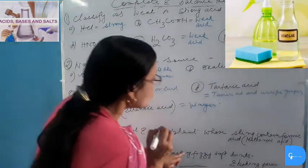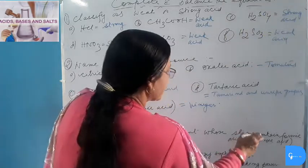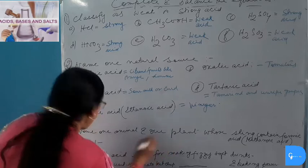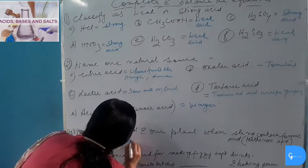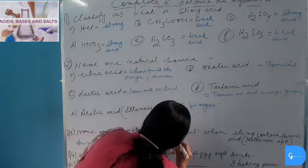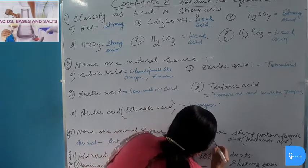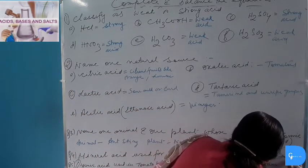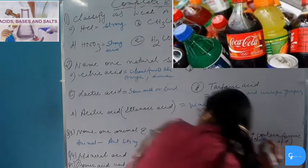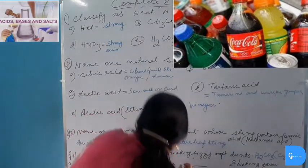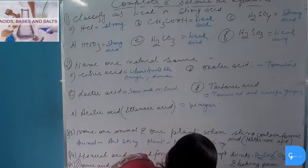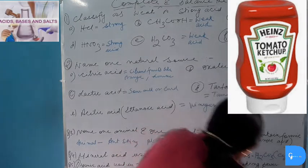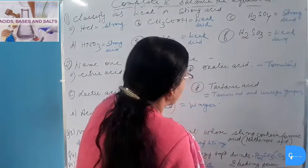Name one animal and one plant whose sting contains formic acid (also known as methanoic acid): the animal is ant — ant sting contains formic acid. Among plants, nettle leaf sting contains formic acid. Carbonic acid is used for making fizzy soft drinks. Acetic acid (ethanoic acid) is the organic acid used in tomato ketchup and pickles. Baking soda is converted into baking powder by adding tartaric acid.